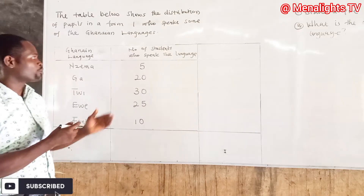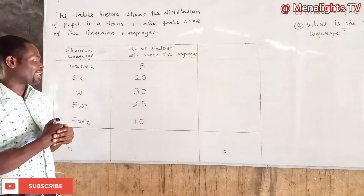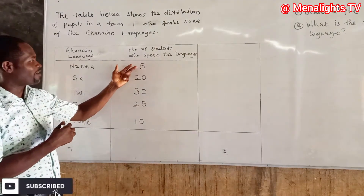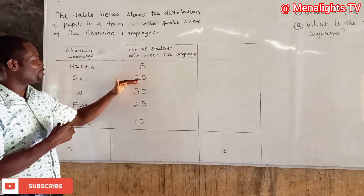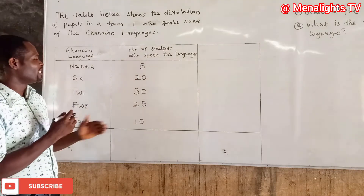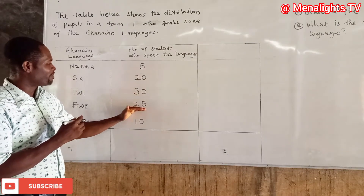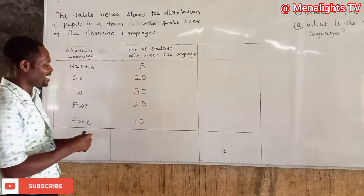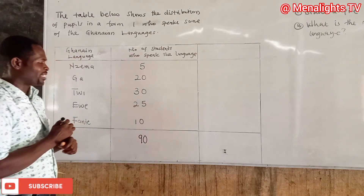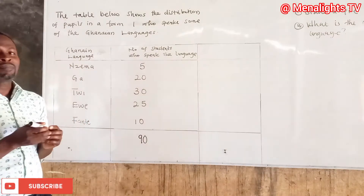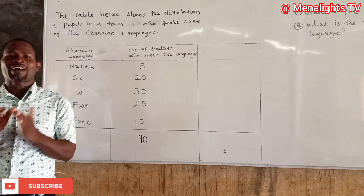Before you draw a pie chart, first of all you have to know the total number of students in the class. So we add: 5 + 20 = 25, then 25 + 25 = 50, plus 30 and 10 — so the total is 90.